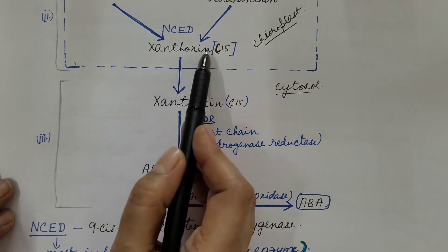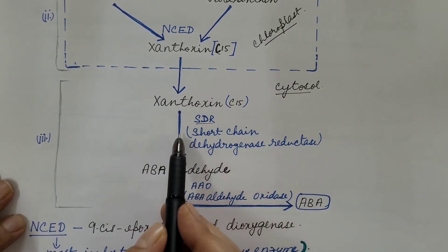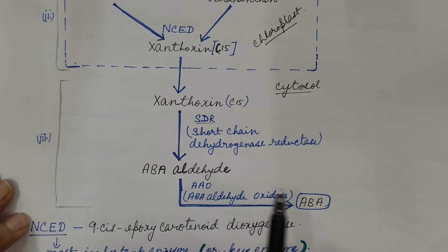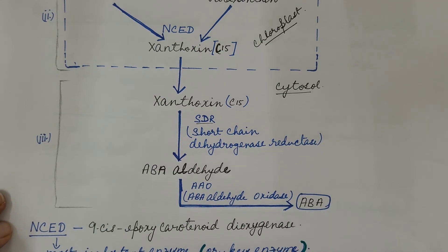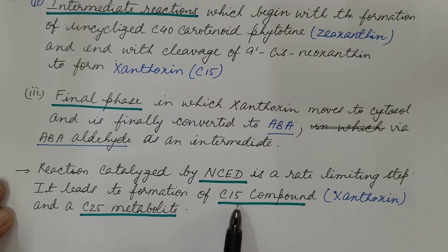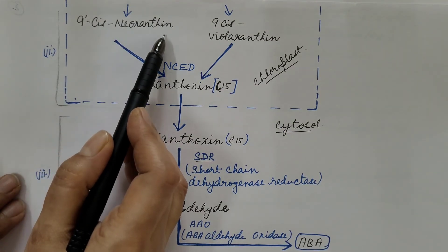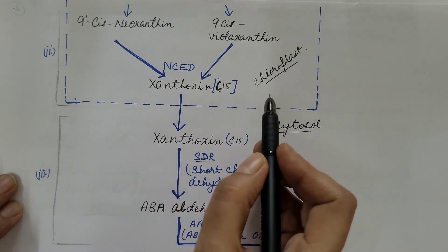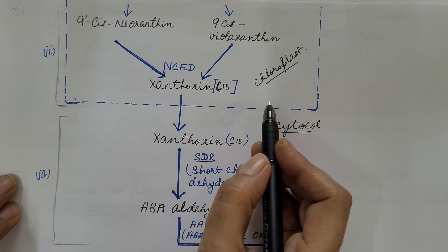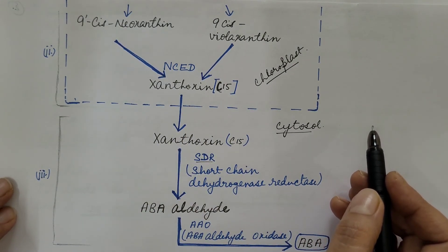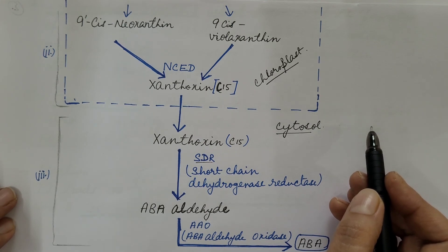Third is the final phase, in which xanthoxin moves to the cytosol and is finally converted into abscisic acid via abscisic acid aldehyde as an intermediate. The reaction catalyzed by NCED is a rate-limiting step — it leads to the formation of the 15-carbon compound xanthoxin and a 25-carbon metabolite. This step, catalyzed by 9-cis-epoxycarotenoid dioxygenase, is the rate-limiting step in the biosynthesis of abscisic acid.